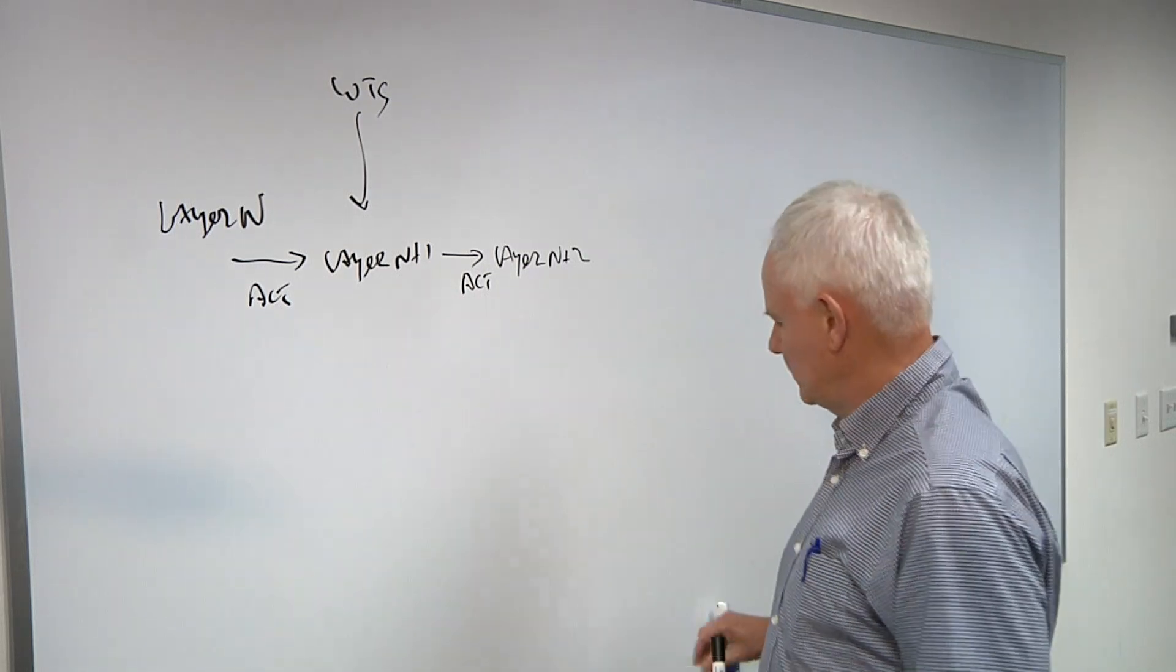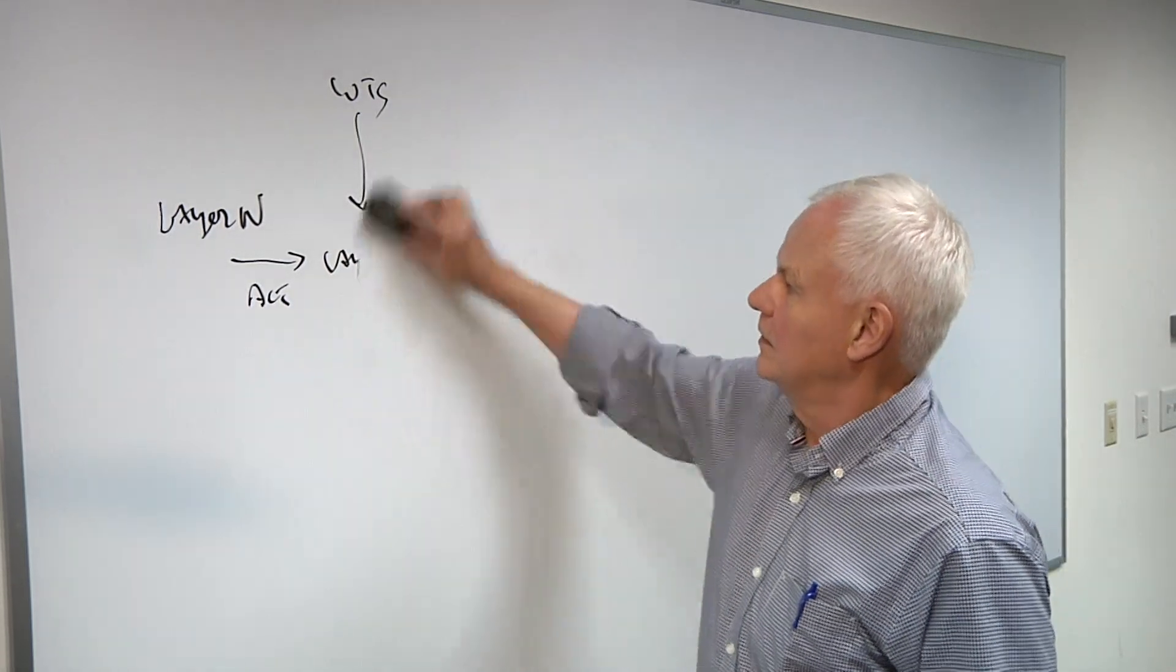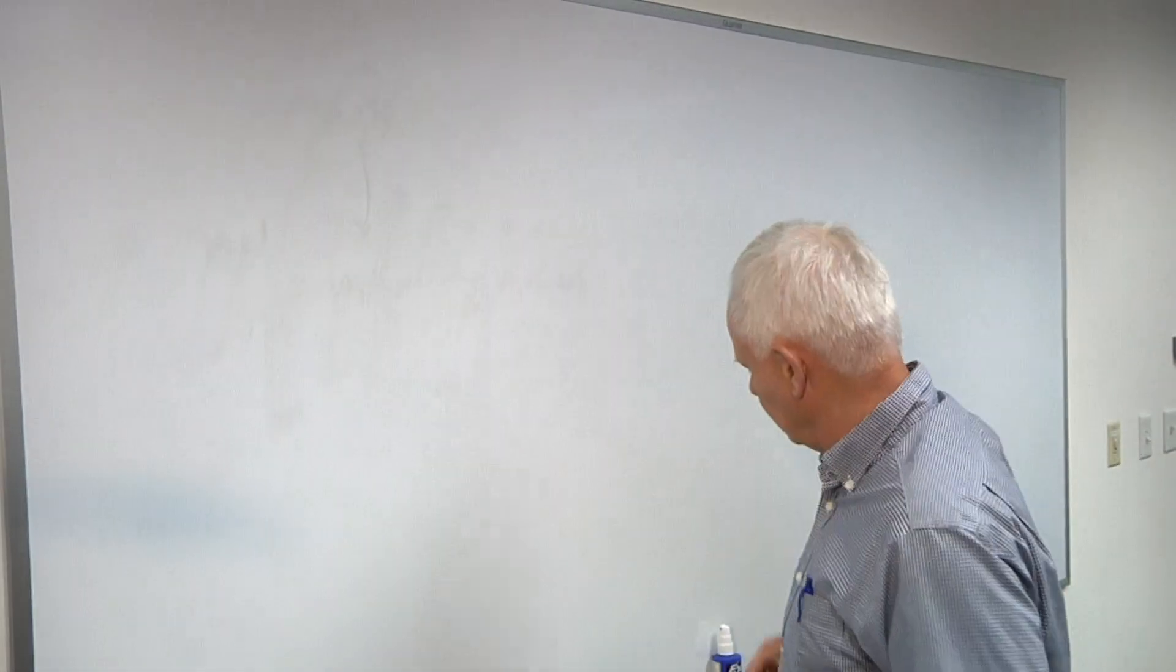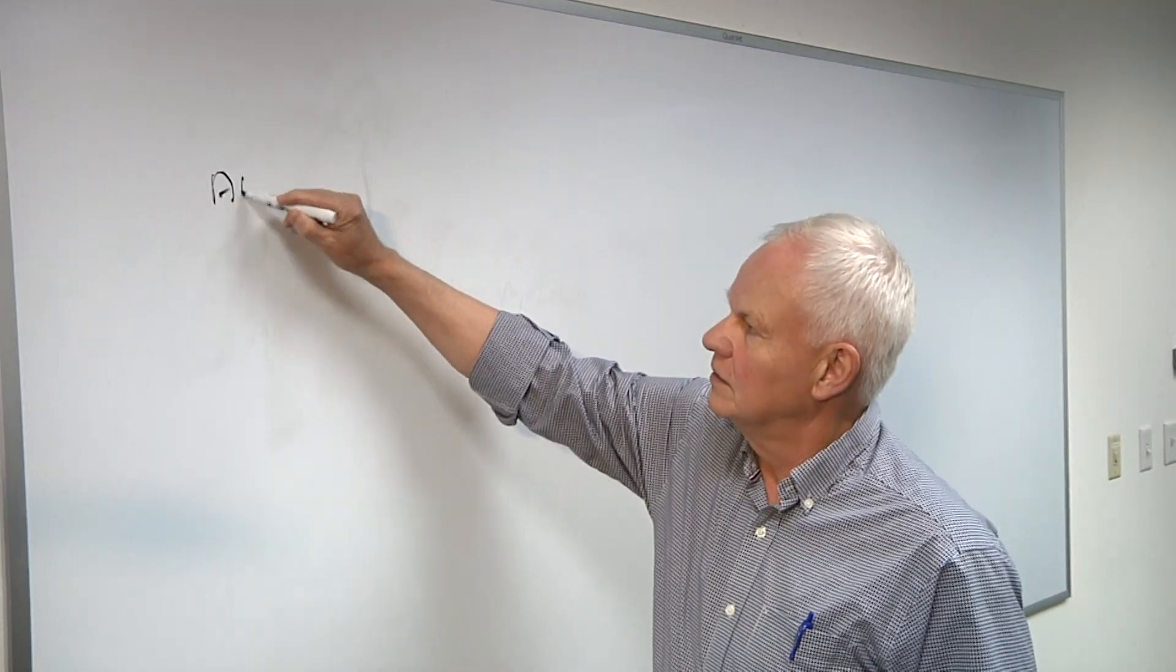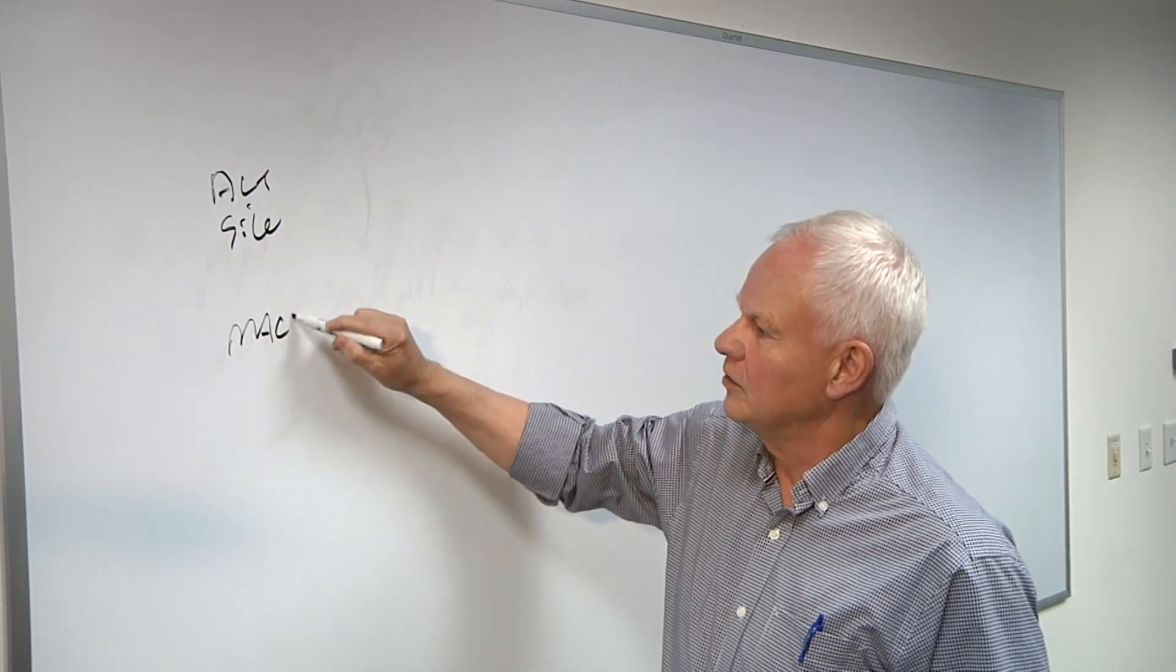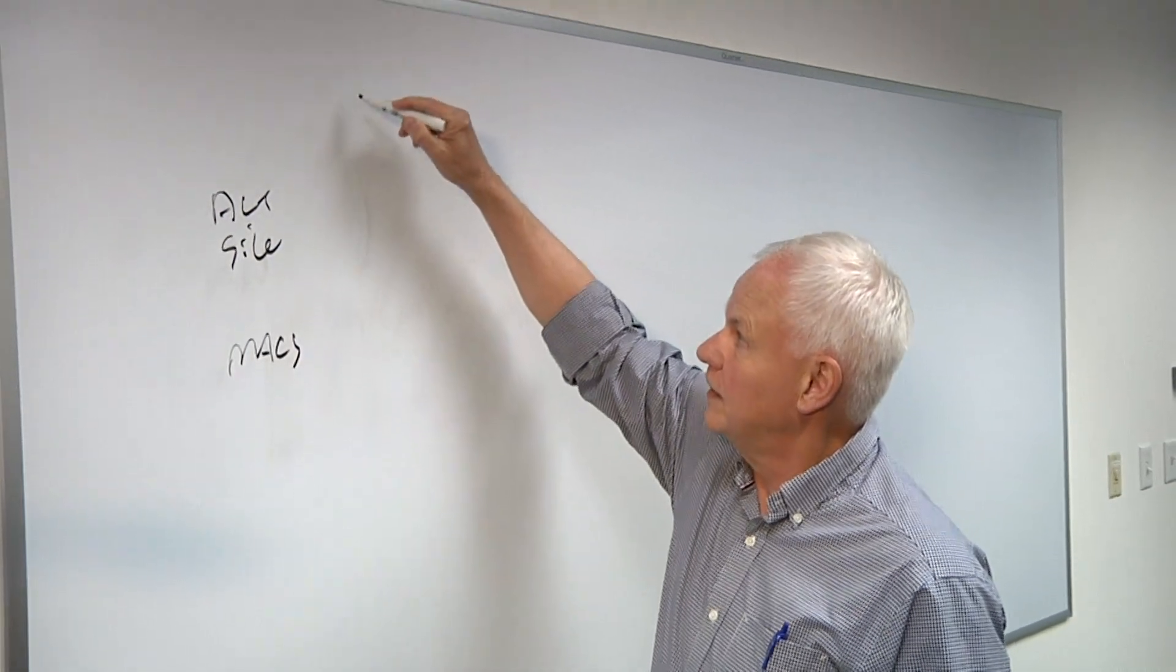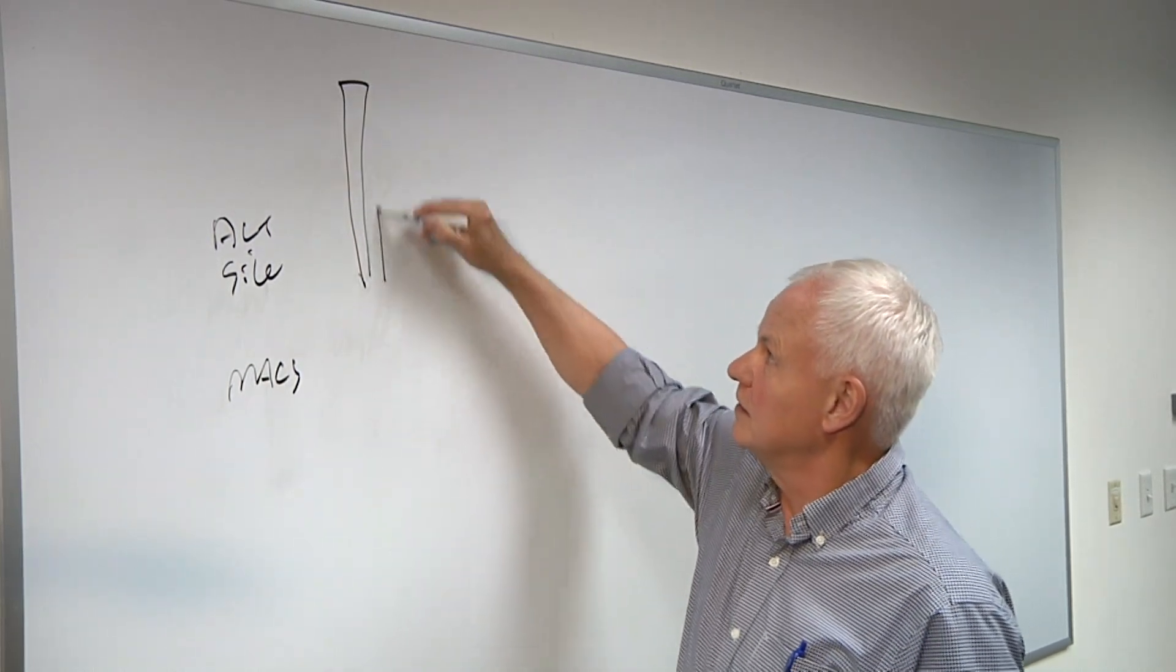Right. So what we do is we want to look at some more details. This is the concept of how the layers work. What we want to look at is what is the activation size layer by layer? What's the number of max layer by layer? So if you look at it, what typically is the case is the biggest activations are in the earliest layers.